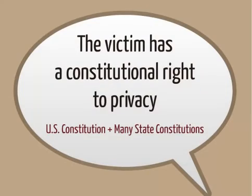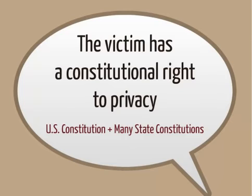Second, crime victims have a federal constitutional right to privacy. Although the right is not expressly found in the United States Constitution, the Supreme Court has interpreted the Constitution as including this right in several cases. For example, in Roe v. Wade, the court held that a right of personal privacy, or a guarantee of certain areas or zones of privacy, does exist under the Constitution. Additionally, many state constitutions provide an explicit or implicit right to privacy for all people or for crime victims specifically. If your state's Constitution doesn't have a general privacy clause, look in the Constitutional Victims' Rights Provisions for an explicit or implicit right to privacy through the right to be treated with fairness, dignity, or respect. The right to privacy and to be treated fairly is sometimes found in state statutes rather than in the Constitution.